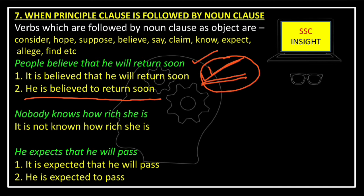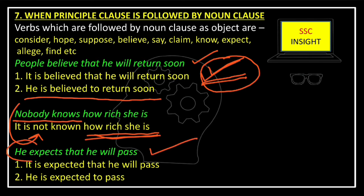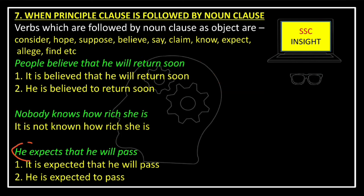In case of a negative pronoun: 'Nobody knows how rich she is' — passive: 'It is not known how rich she is.' Next: 'He expects that he will pass' — passive: 'It is expected that he will pass,' or we can say 'He is expected to pass.'